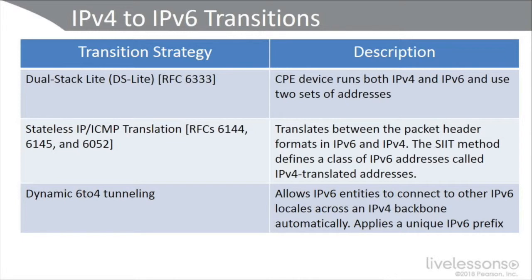The next option is Stateless IP/ICMP Translation (SIIT), covered by several RFCs. It translates between packet header formats in IPv6 and IPv4, and defines a class of IPv6 addresses called IPv4-translated addresses. Another popular option is dynamic 6-4 tunneling, which allows IPv6 entities to connect to other IPv6 locales across an IPv4 backbone automatically, applying a unique IPv6 prefix.